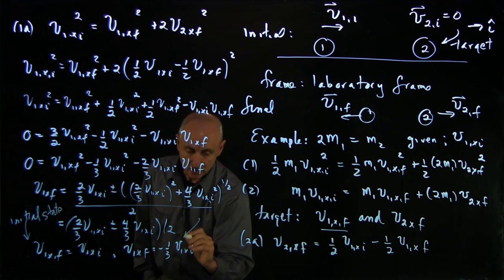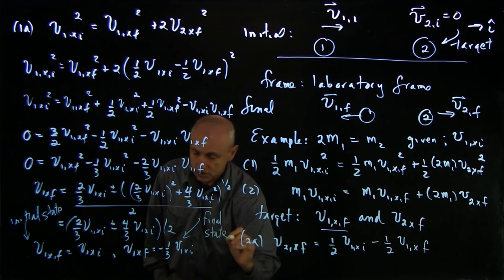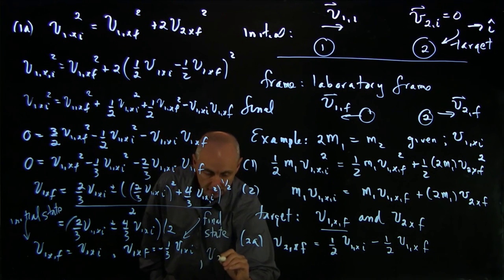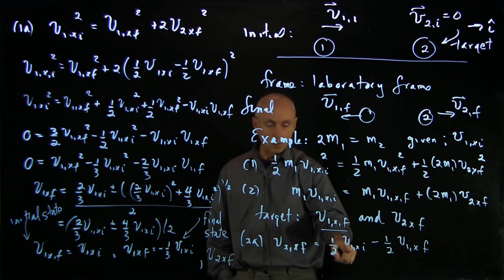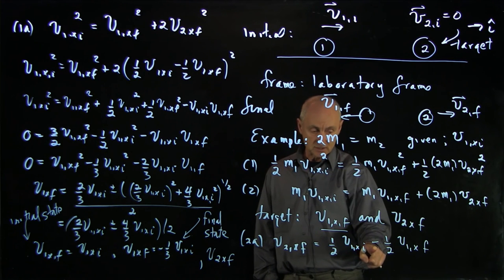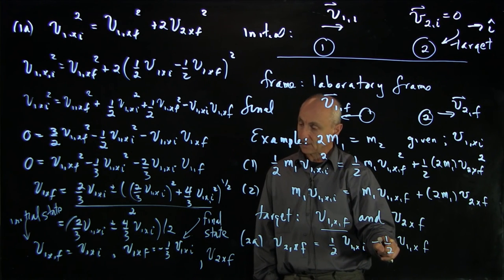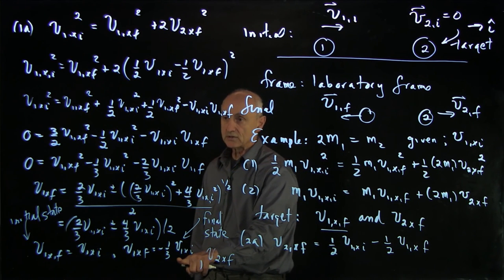And this solution here is the final state. Just to complete the picture, v2x final, that's equal to 1/2 v1x initial minus 1/2 times v1x final. But v1x final is negative 1/3.